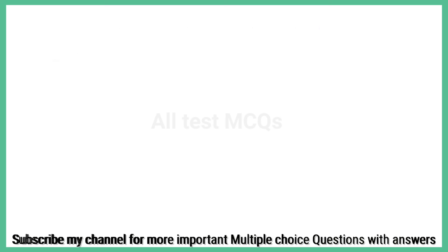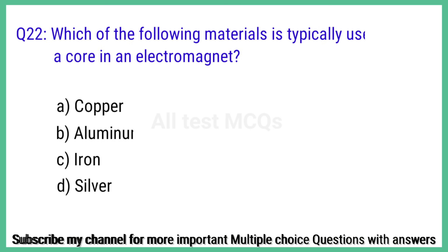Question number 22. Which of the following materials is typically used as a core in an electromagnet? The right answer is option C: Iron.